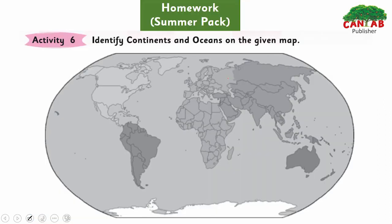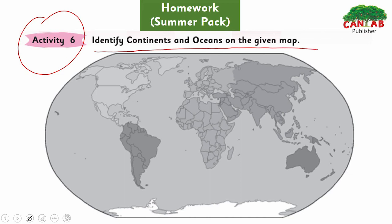Now there is a homework for you in your summer pack — the activity to identify continents and oceans on the given map. Let me make it easier for you. I'll mention some continent and ocean names: this is North America, this is Africa — so I've told you two continents, you mention the remaining five. There are five oceans; I'll share two with you — this is the Indian Ocean and this is the Atlantic Ocean. You have to write the remaining three.